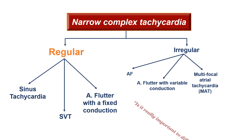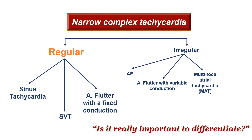Is it really important to differentiate the three? Of course, yes — treatment is very different. For sinus tachy, you would not treat the tachycardia itself but rather the cause: treat the dehydration, the sepsis, the pulmonary embolism. Do not try to rate control a sinus tachycardia patient. If it's SVT, you'd go down the vagal maneuvers route and try medications like adenosine or verapamil. If it's atrial flutter, you might think about rate control rather than rhythm control, and you'll need to consider anticoagulation.